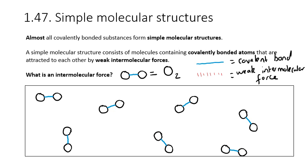Intermolecular means between molecules, just like international means between nations. In this diagram, I've got some oxygen gas, and you can see I've got covalent bonds between oxygen atoms forming the O2 molecules. There are weak intermolecular forces between these molecules — I represent these with a dashed line.